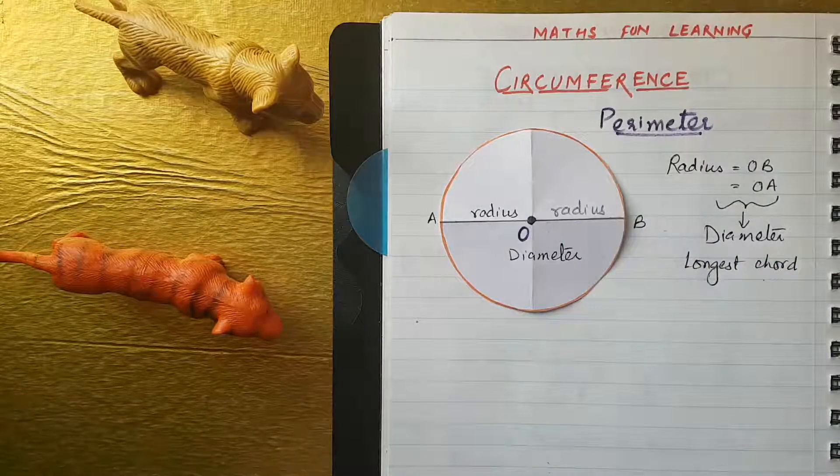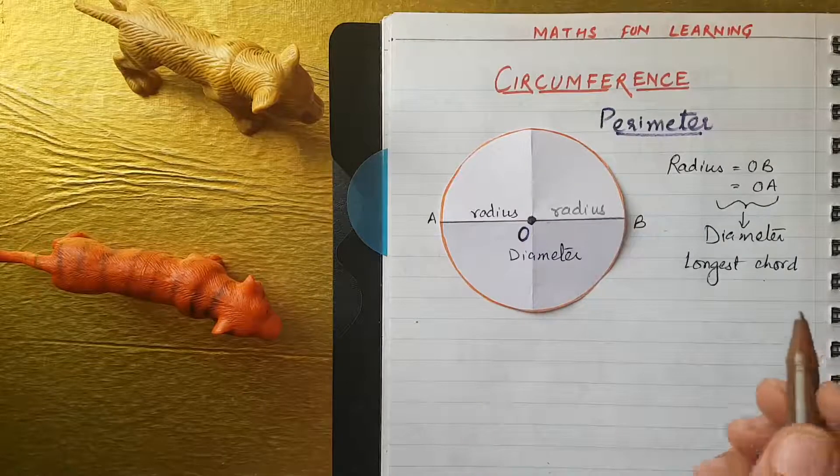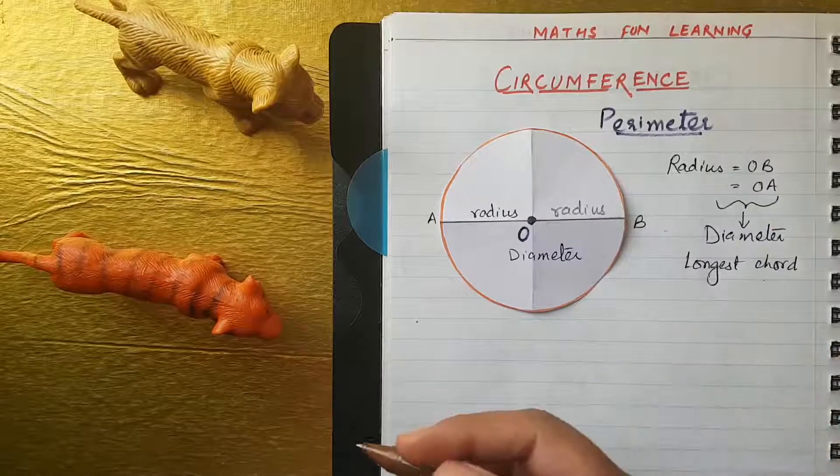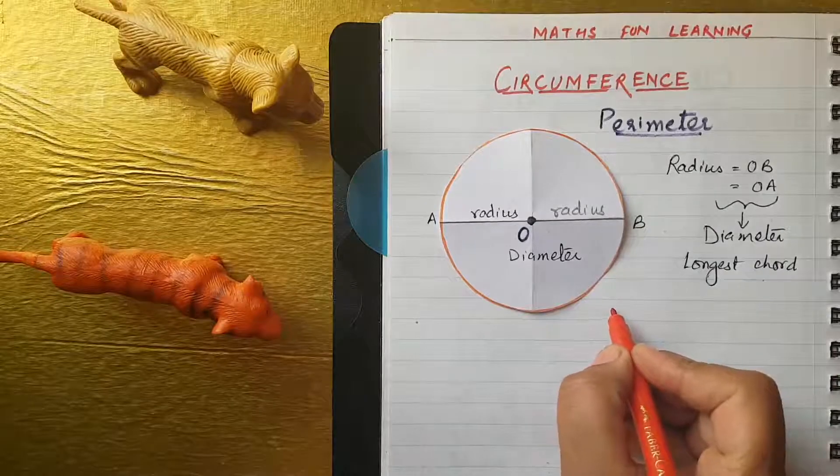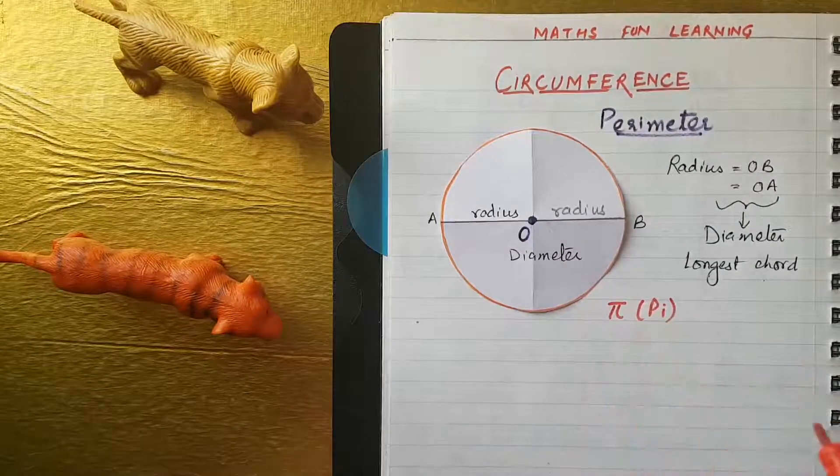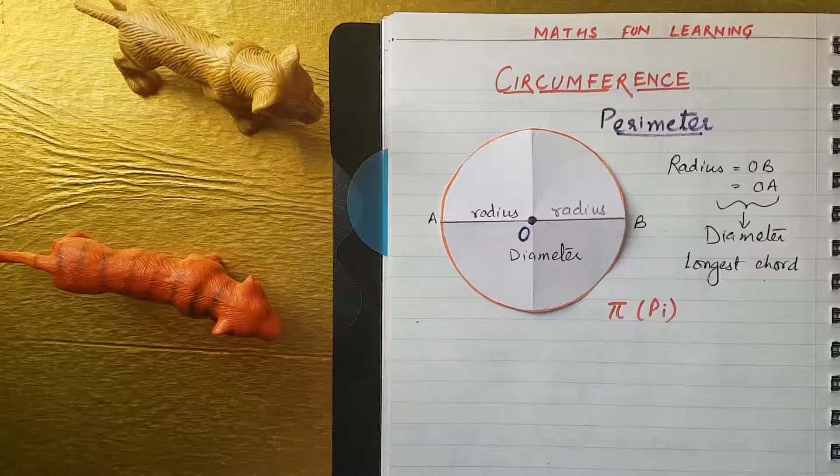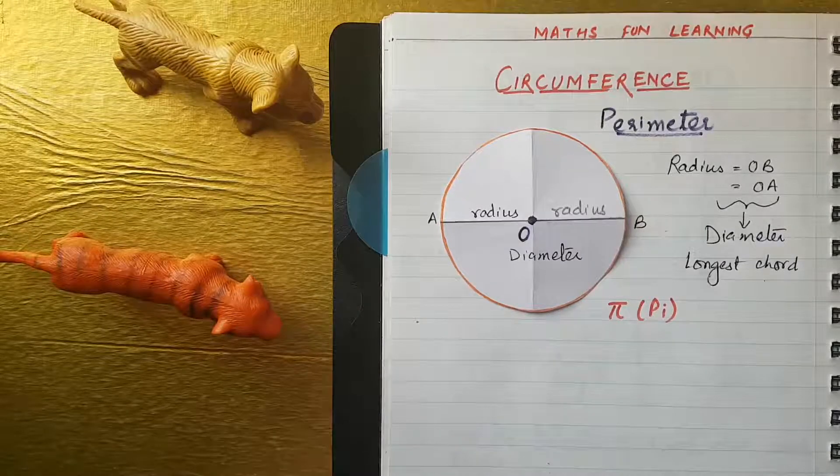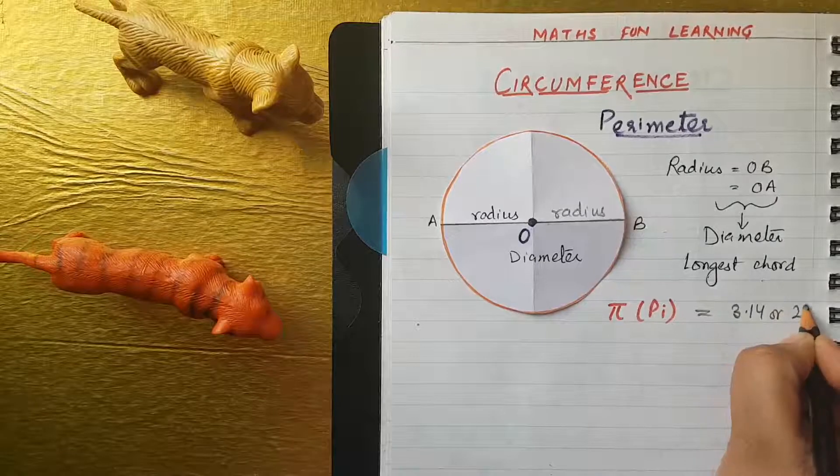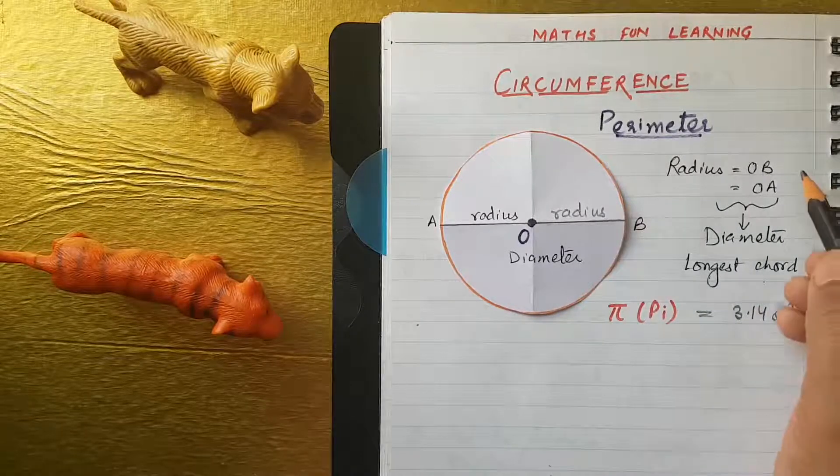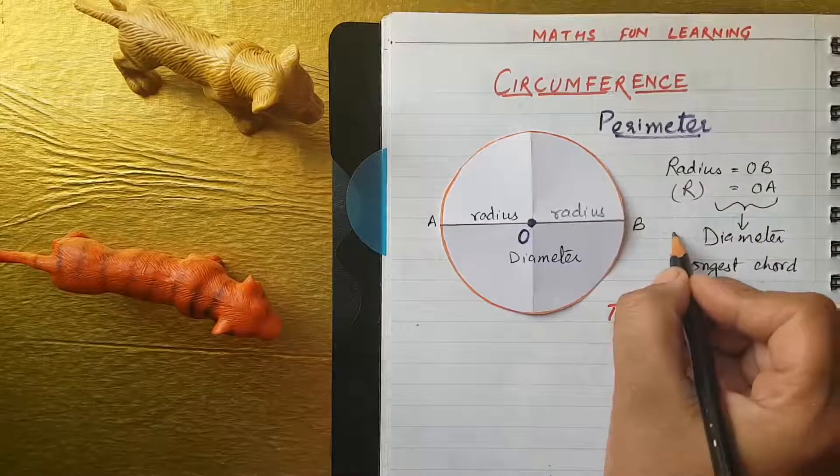Okay. So, now, I will introduce one more beautiful member of the circle in which you can see in a formula of circumference that is pi. Pi. Yeah. Isn't it beautiful name pi? Pi is a special mathematical constant with the approximate value as 3.14 or 22 by 7. So, we used here, radius, which we donated R, diameter, which we donated D.